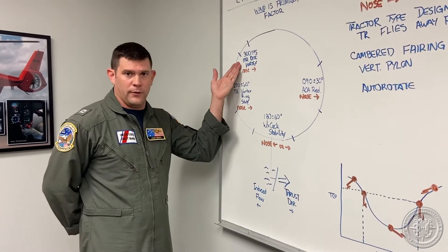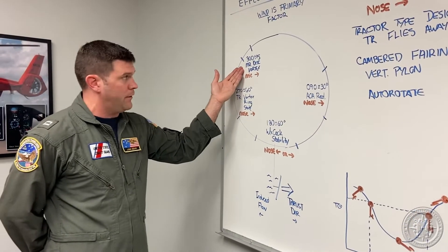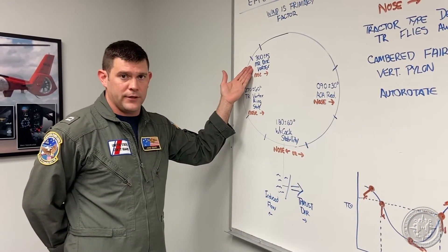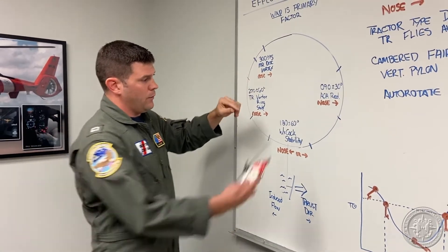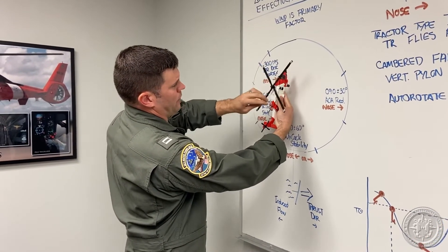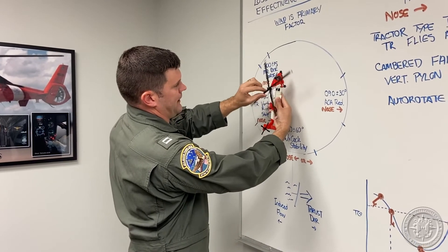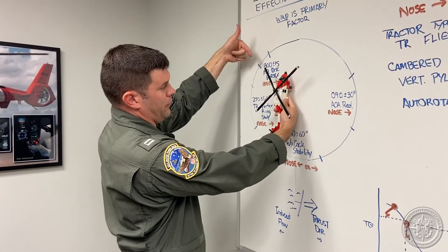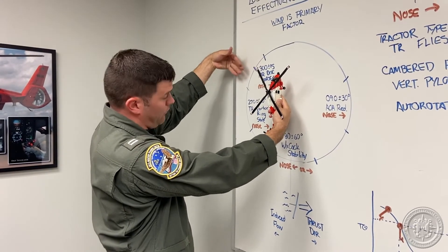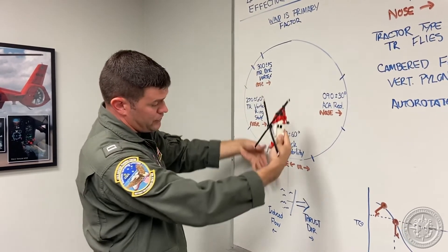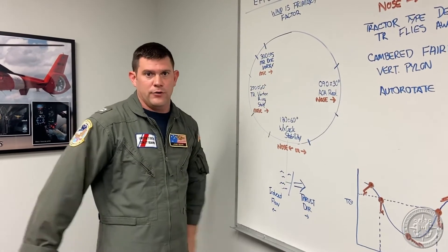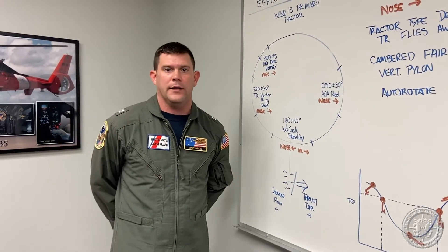Finally, the last category is when wind is coming into the rotor system from approximately 300 plus or minus 15 degrees. As discussed, when the rotors are turning, as the rotor passes that point in space and the wind catches the rotor, the vortices of that rotor get pushed over the tail rotor and again will induce a right rotation, absent any inputs from the pilot.